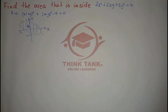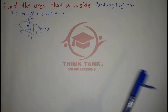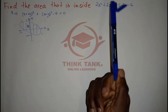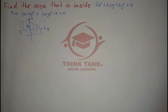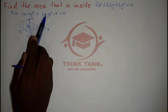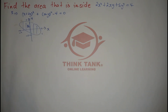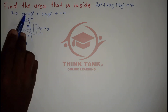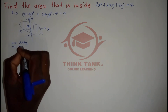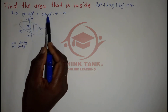Now I need to find a simple transformation. In some problems a transformation is given, but here we have to find one ourselves. Since I have (x + 2y)² + (x - y)², my goal is to obtain a circle. So I'll let u = x + 2y, so this term becomes u², and let v = x - y, so this term becomes v².